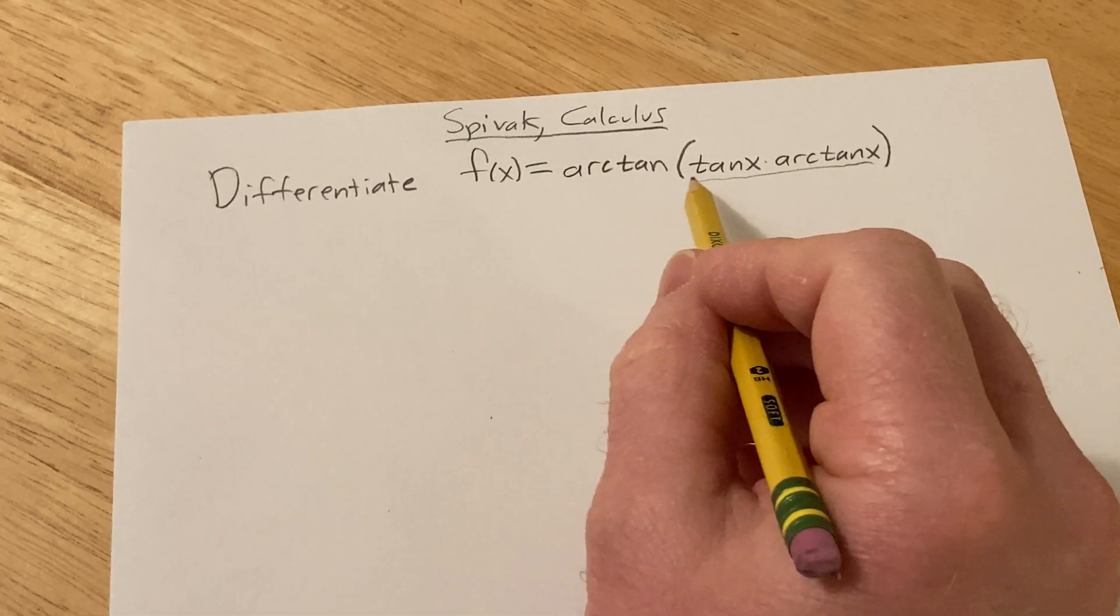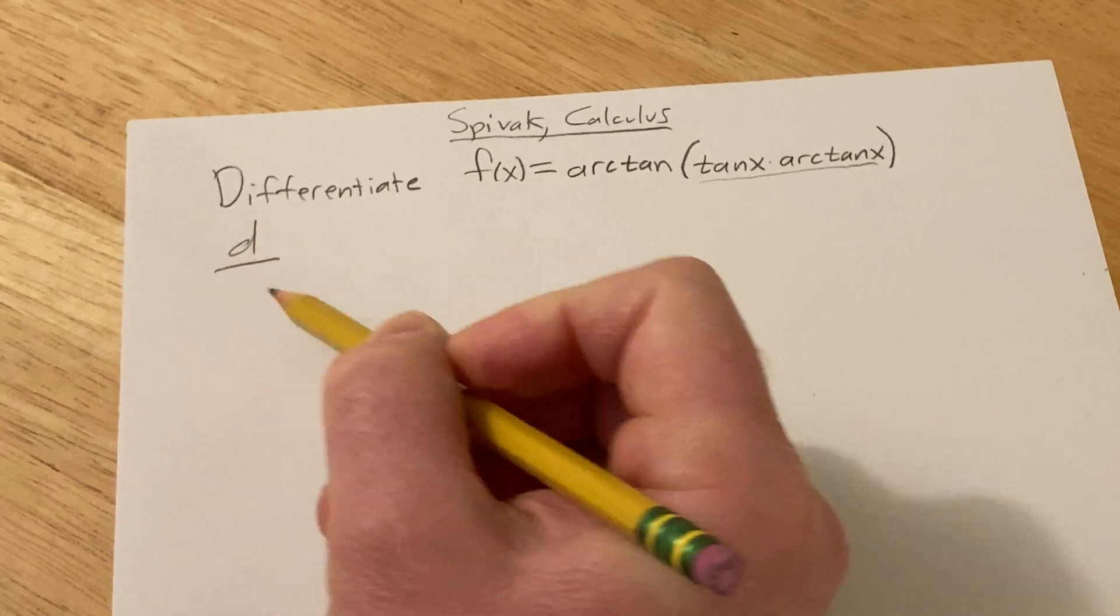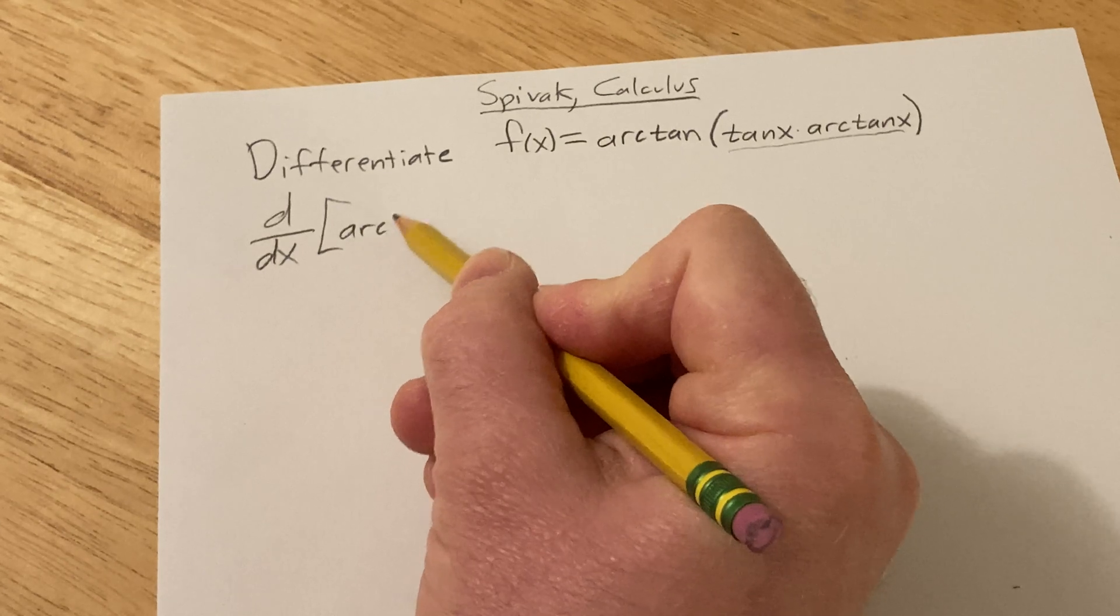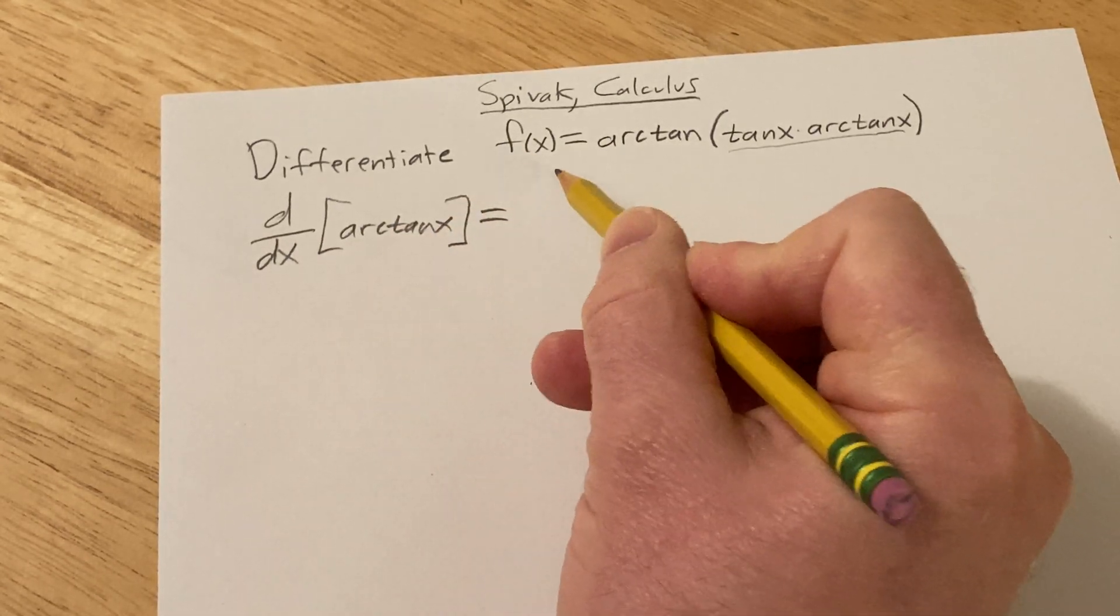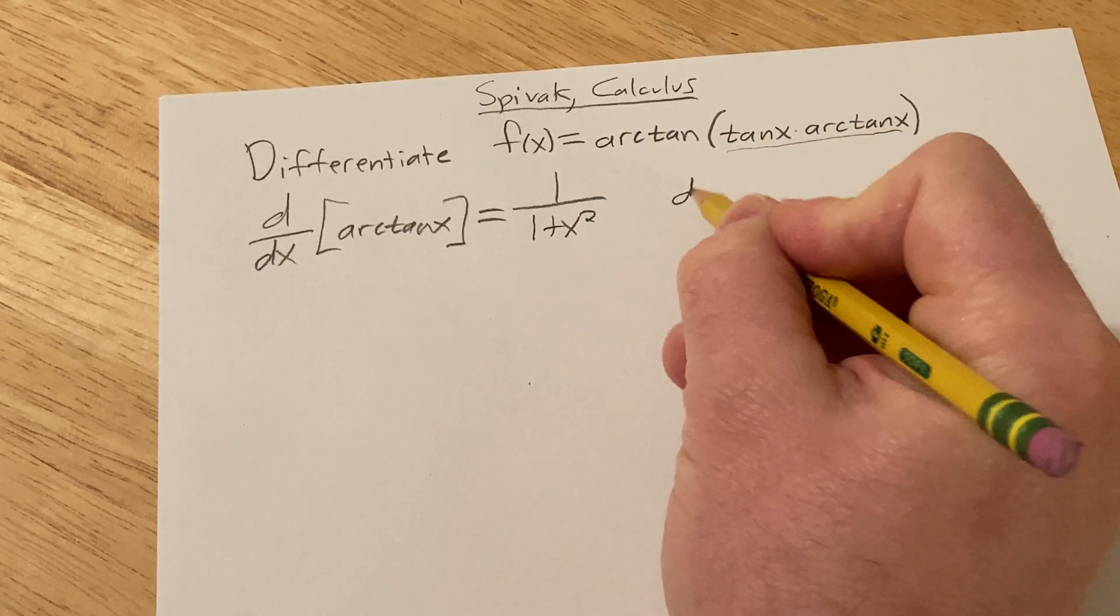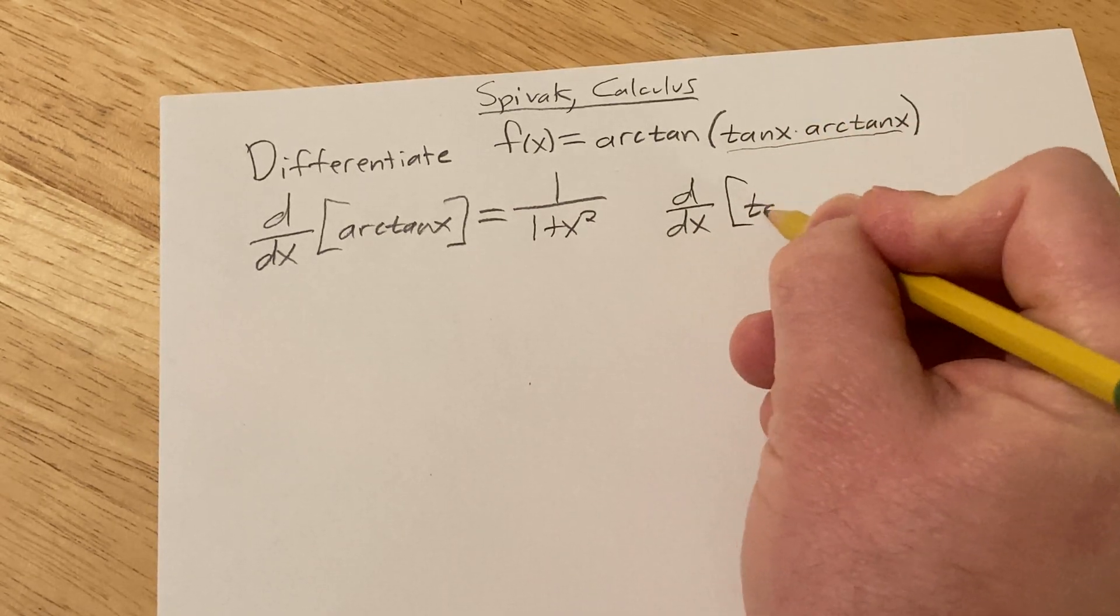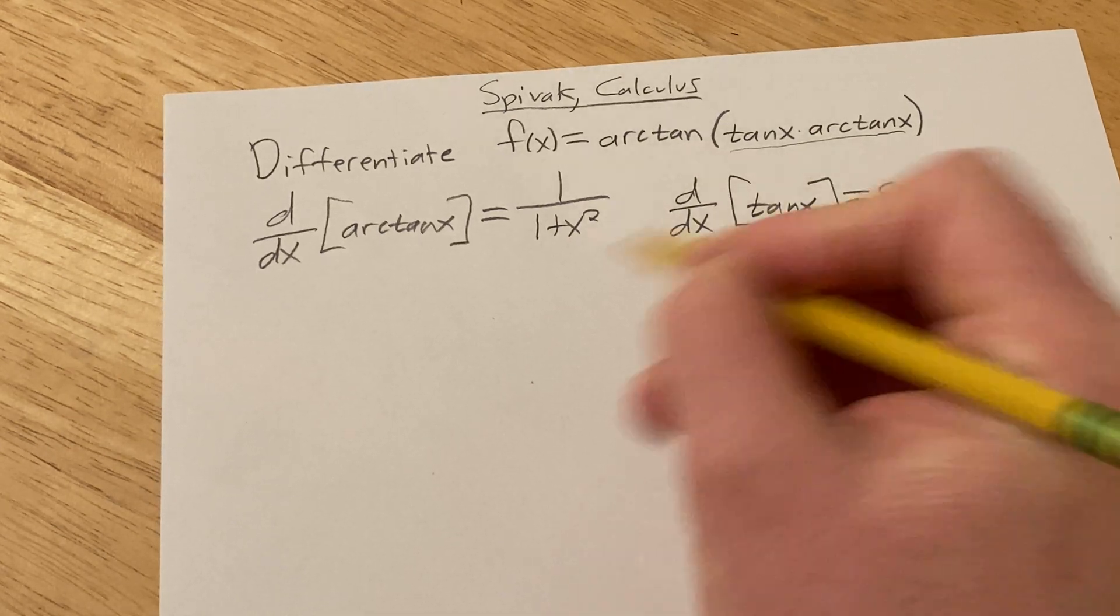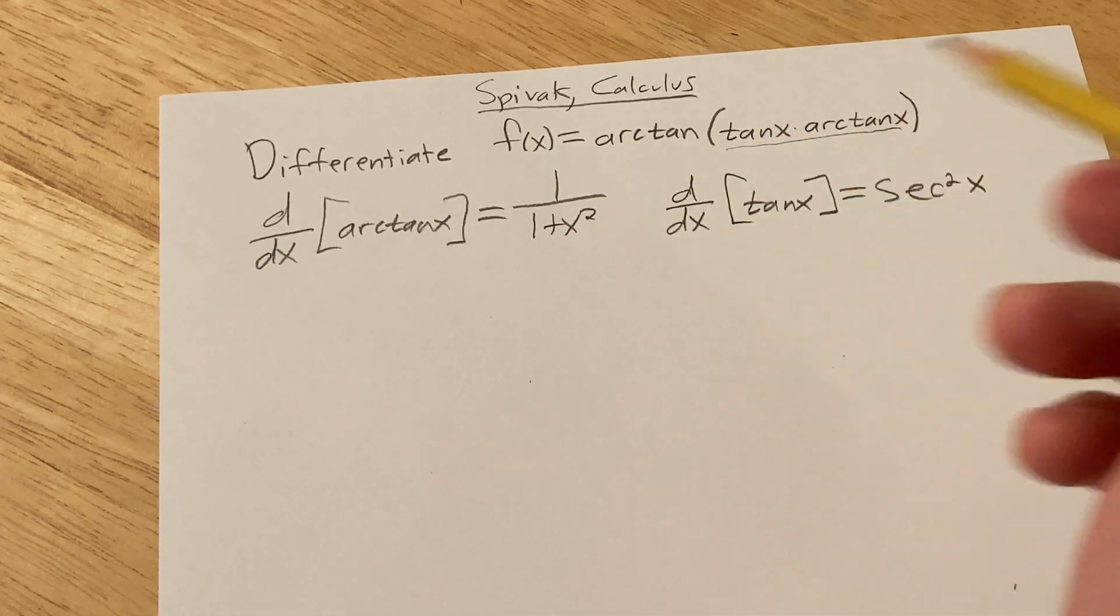So let me just refresh your memory on two derivatives. The derivative with respect to x of the arctan function, so arctan of x, this is equal to 1 over 1 plus x squared. And the derivative with respect to x of the tangent function, this is going to be secant squared x. So those are the two main formulas we're going to be using on top of the chain rule and the product rule.